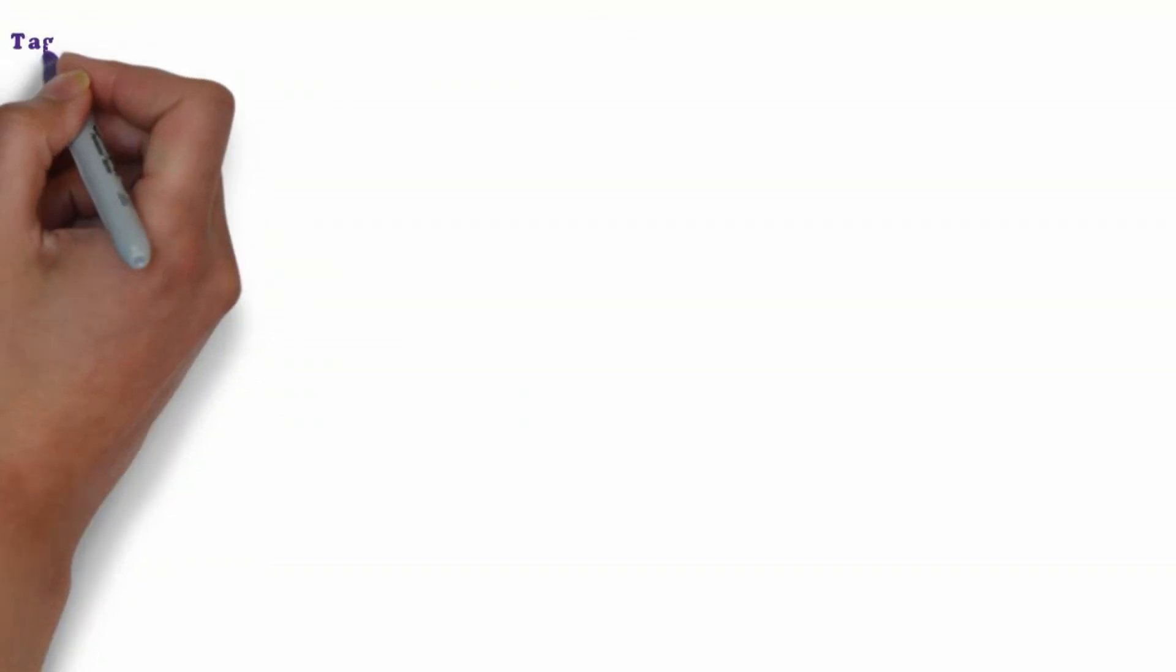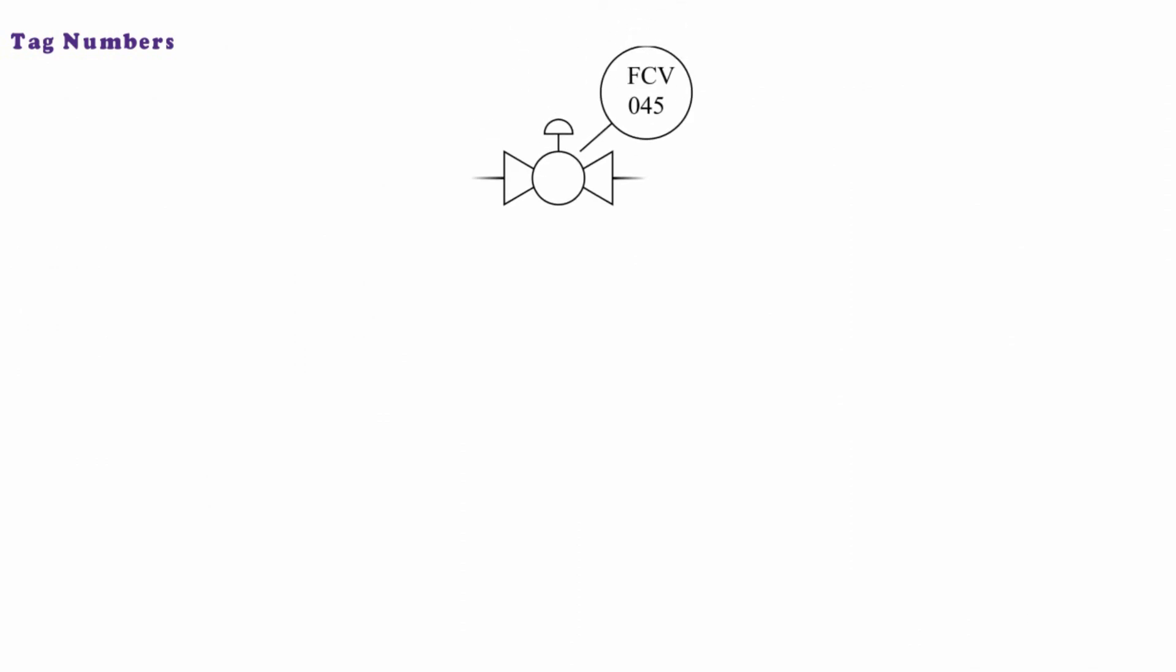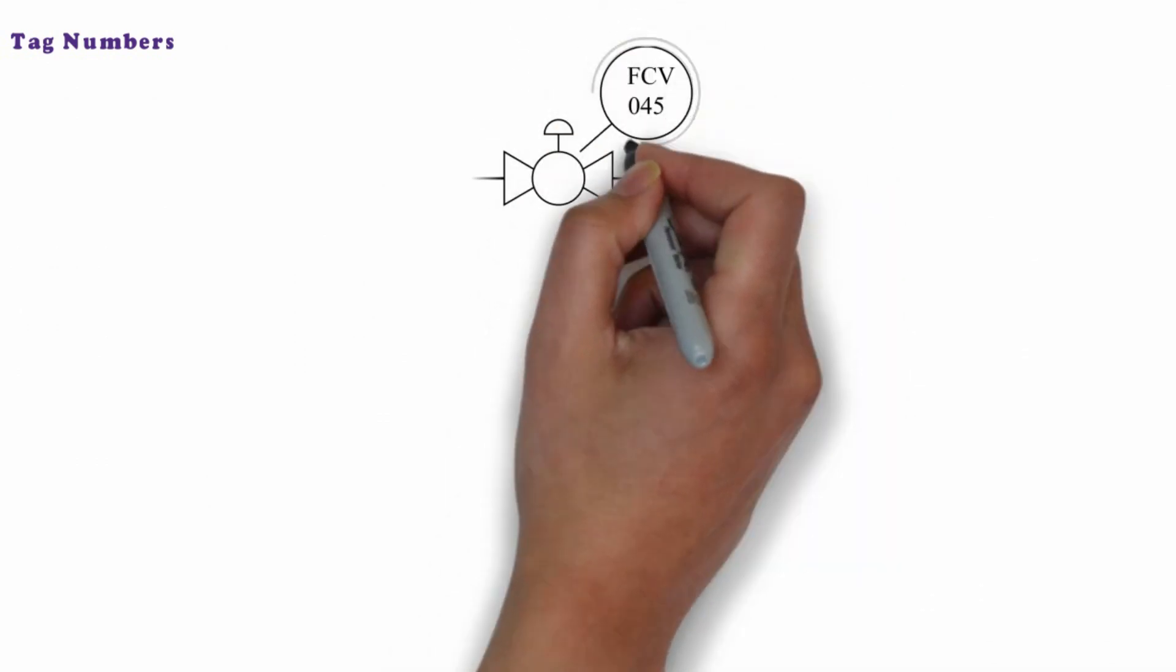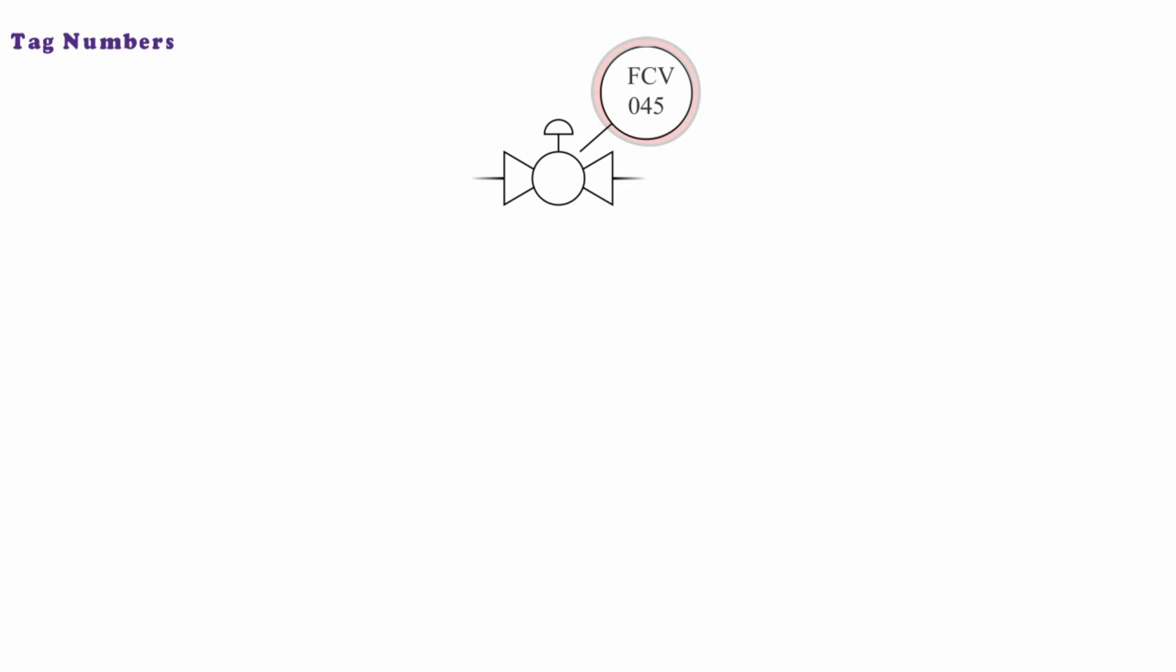This type of bubble is also used to define the function of final control elements such as valves. This is done with a call out line pointing to the symbol for the control element. The letters and numbers inside the bubble are described as tag numbers. Inside the shape there are letters and numbers used to designate the property being measured such as flow rate, pressure, temperature or level and the function performed with that measurement. Typical functions are display, record, transmit and control.